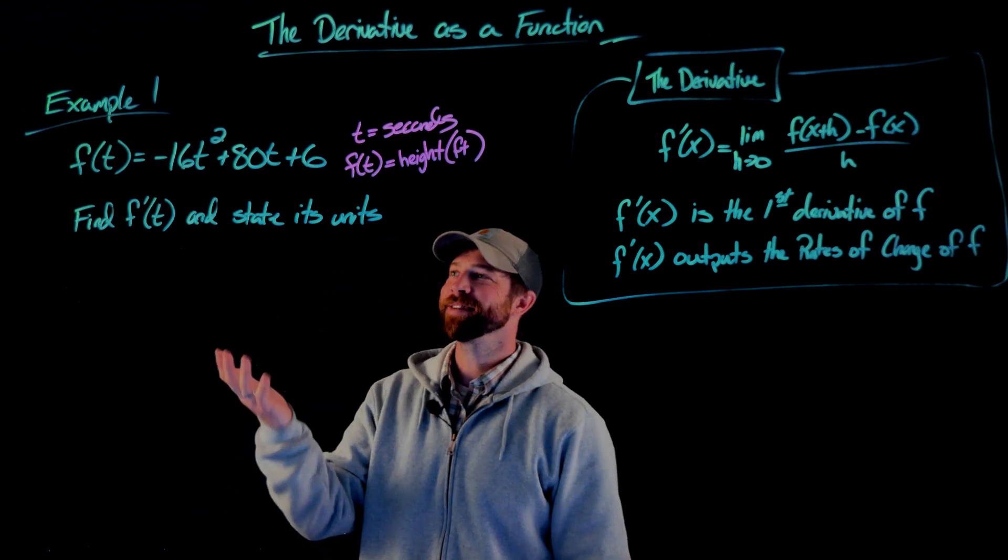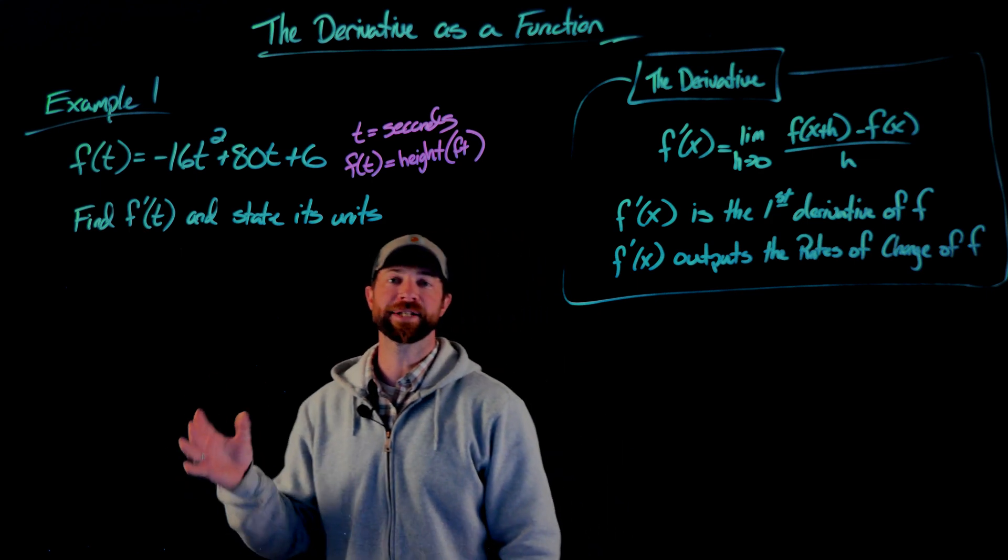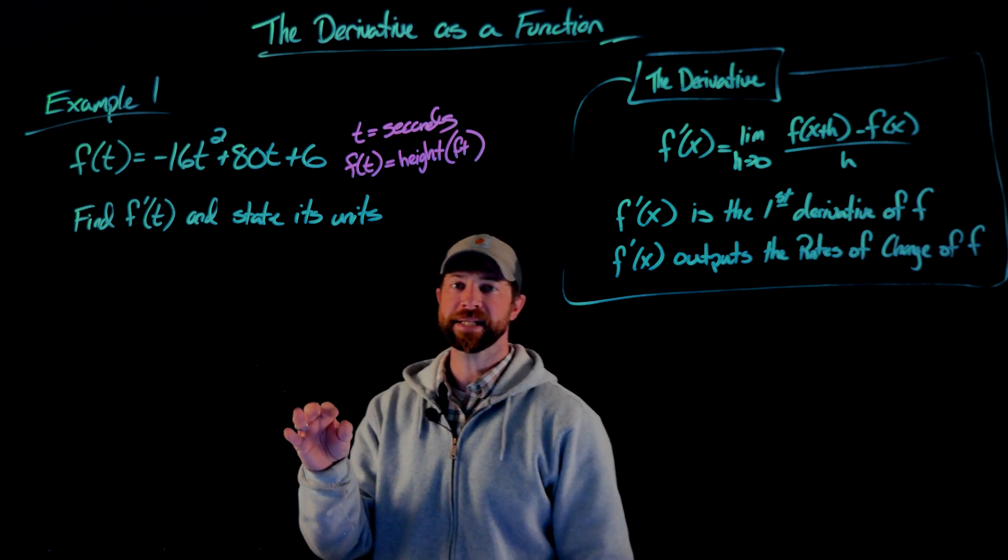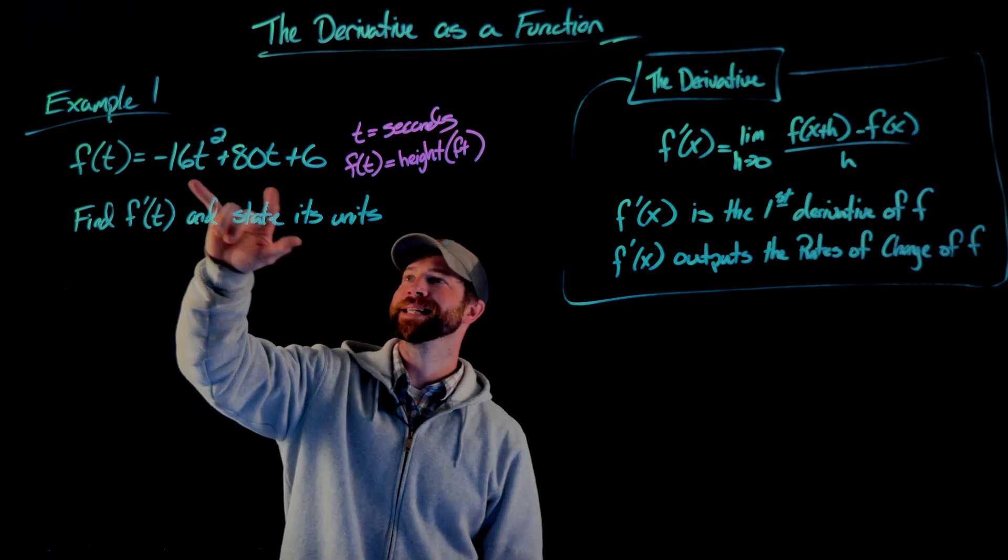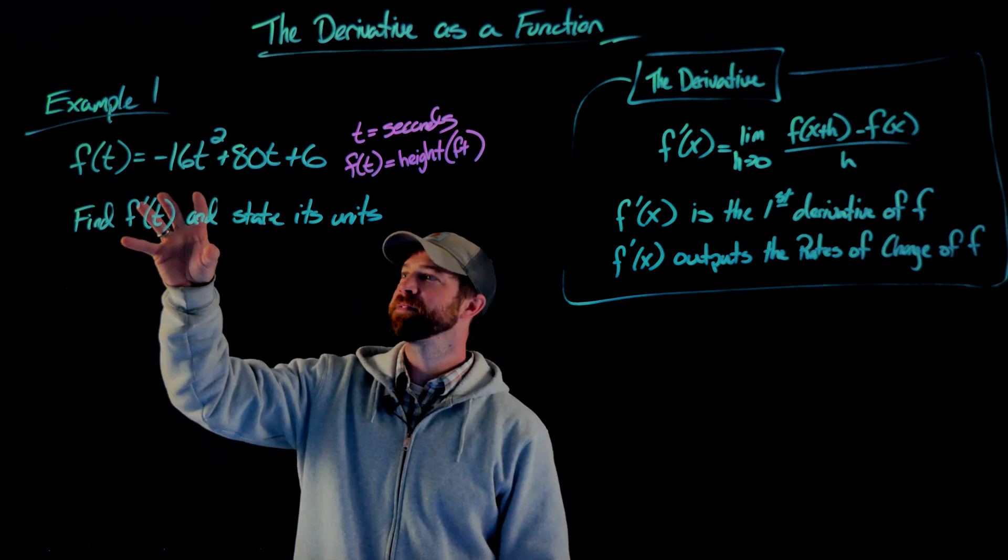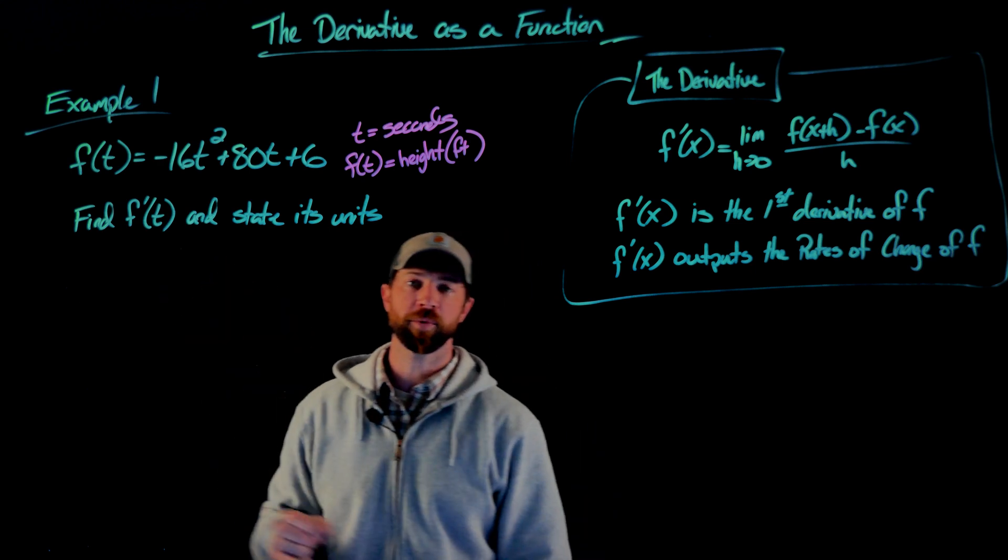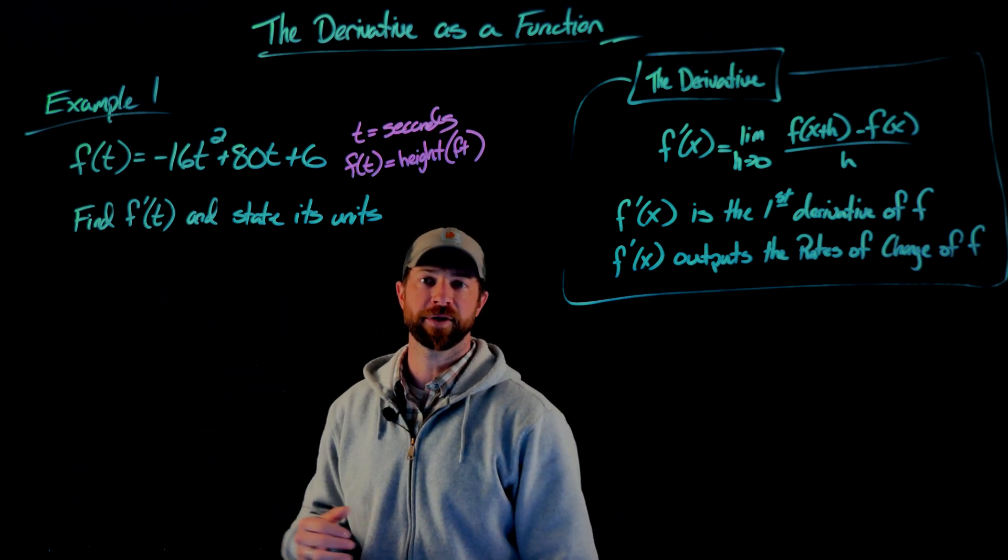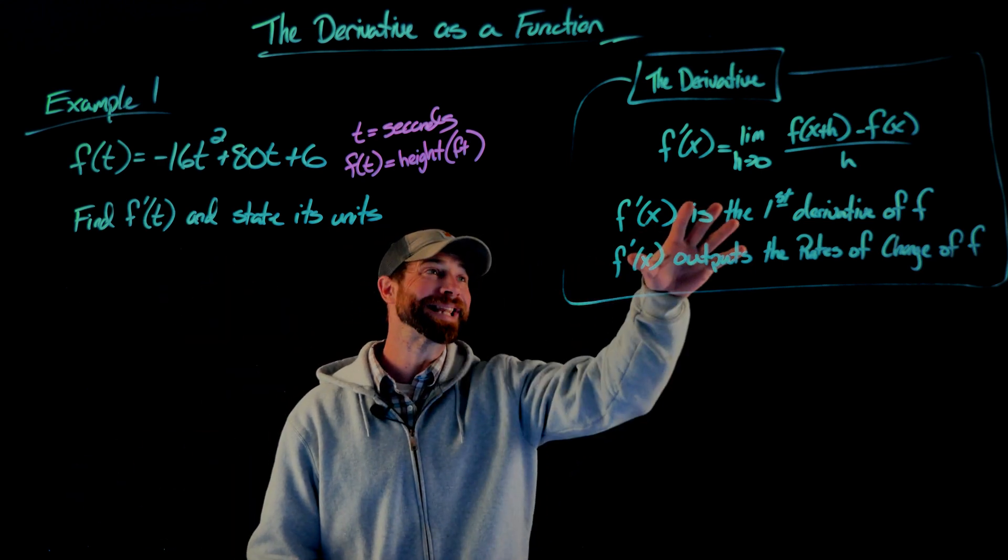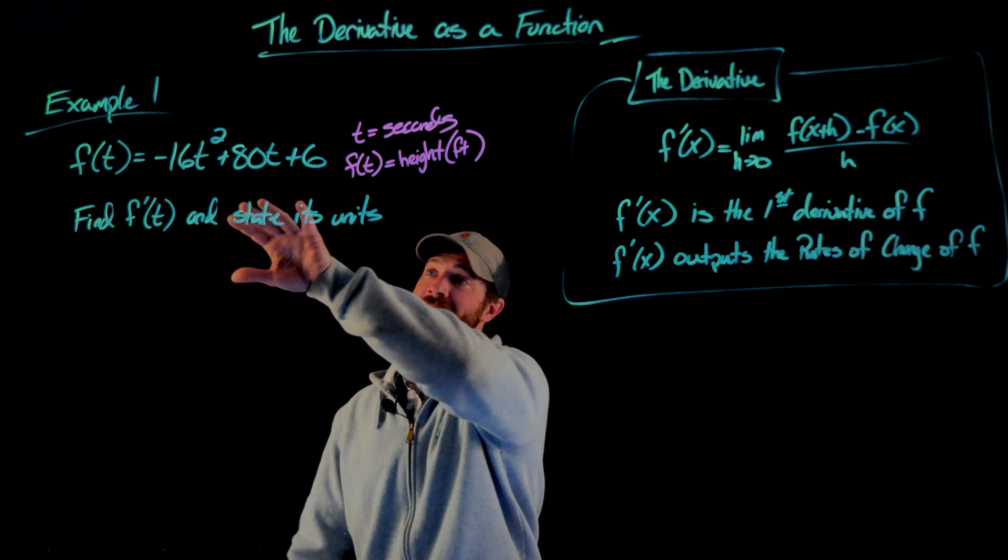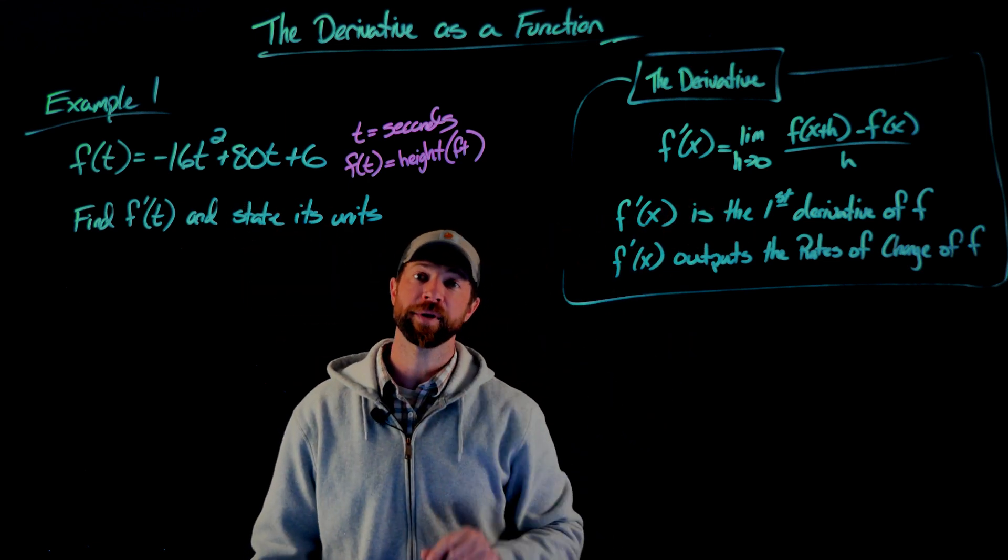Let me show you a quick example. In this example here, we'll give an f of t which is negative 16t squared plus 80t plus 6, where t in this case is an input of seconds and f of t is outputting height in feet. We're being asked to find the first derivative and then state the units of that derivative. We're going to take this definition of the derivative, apply it to this function, and find the first derivative function.